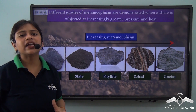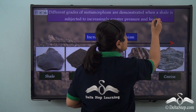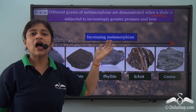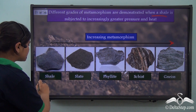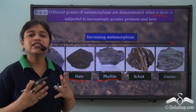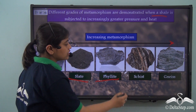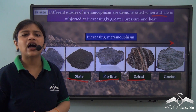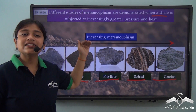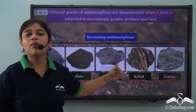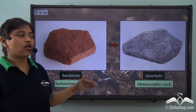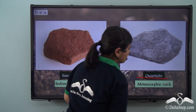Let's take another comprehensive example. Shale is a sedimentary rock. On receiving heat and pressure it changes to slate. On further metamorphosis it changes to felite. On receiving higher temperature and pressure, felite changes to schist. This schist on further metamorphosis changes to gneiss. We can see how shale on increasing metamorphosis changes its form to create new rocks. Similarly, sandstone, a sedimentary rock, on undergoing metamorphosis changes to quartzite, a metamorphic rock.